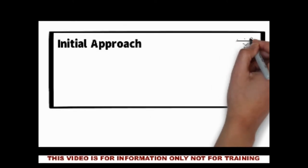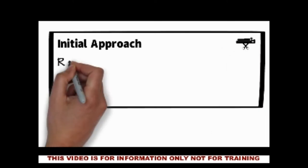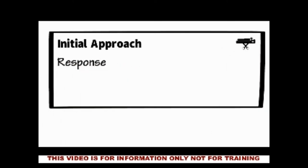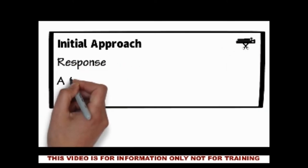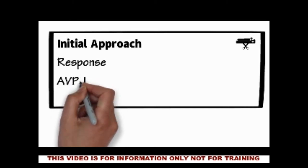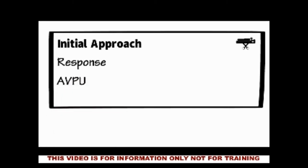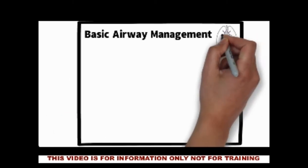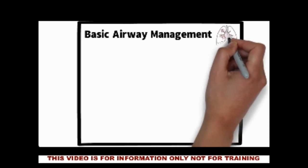For the initial approach to the patient we need to check for a response, and for that we are going to look at the alert, verbal, pain or unresponsive scale — AVPU for short. We will then move on to basic airway management.